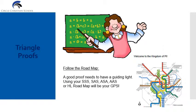We're going to use five different maps to walk through the proofs. The first one would be side-side-side, side-angle-side, angle-side-angle, angle-angle-side, or the HL roadmap.